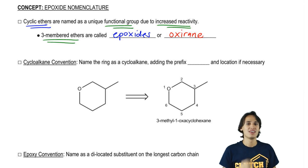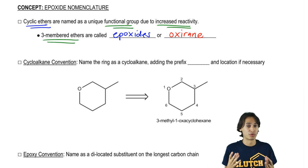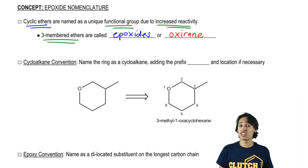Now the challenge becomes how do we name these guys because sometimes they're not always three-membered rings, and there's a lot of substituents. It turns out that there's three different common ways to name epoxides and I'm going to go over all of them right now.